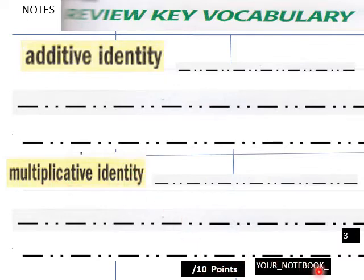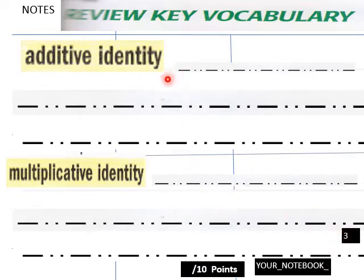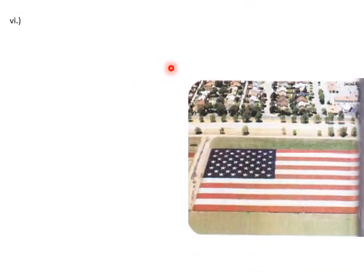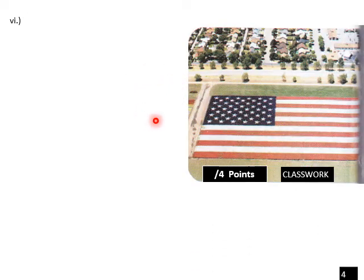Now students, in your own words define additive identity and then multiplicative identity. This is 10 points and goes in your notebook, page three, 2.1 Part Two. Do that now. Teachers, wait on your students or continue on and students can complete this later.